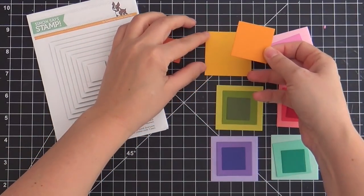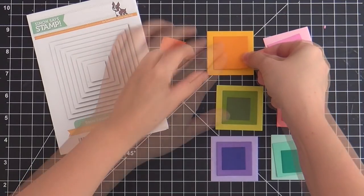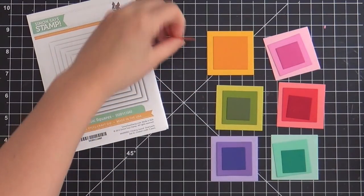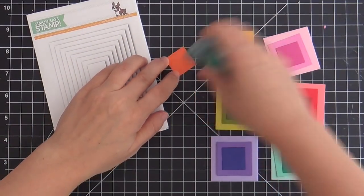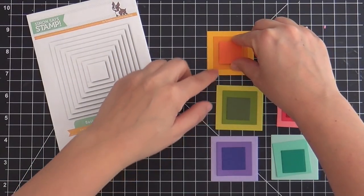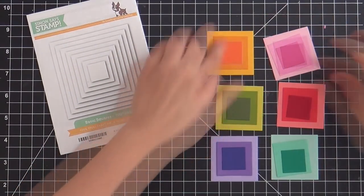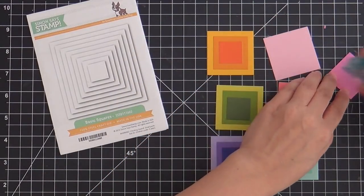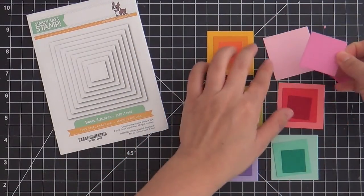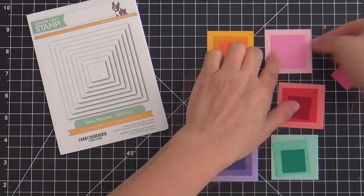So I'm adhering these squares together using a little Gina K tape runner. You could use whatever adhesive that tickles your fancy. Now I don't know if there's a way to get these precisely centered and parallel. I'm doing the old eyeball technique. I'm winging it just like I wing it through life.